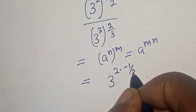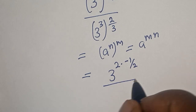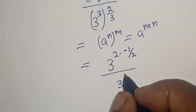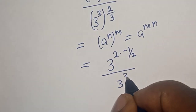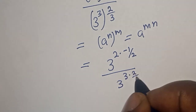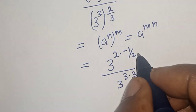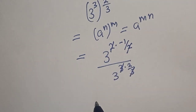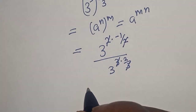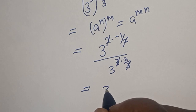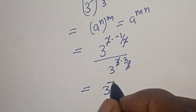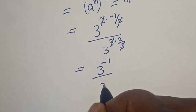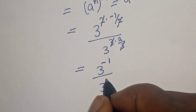...divided by 3 to the power of 3 multiplied by 2 over 3. This will cancel, and this will cancel, giving us 3 to the power of minus 1 divided by 3 squared.